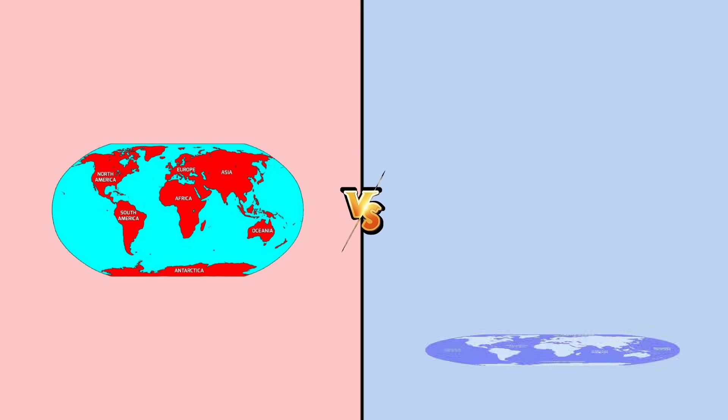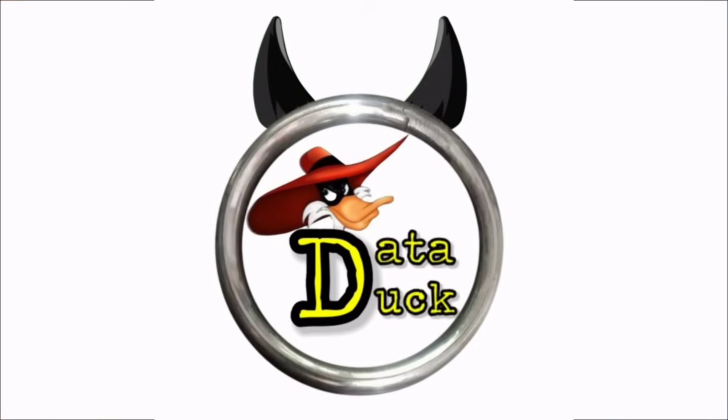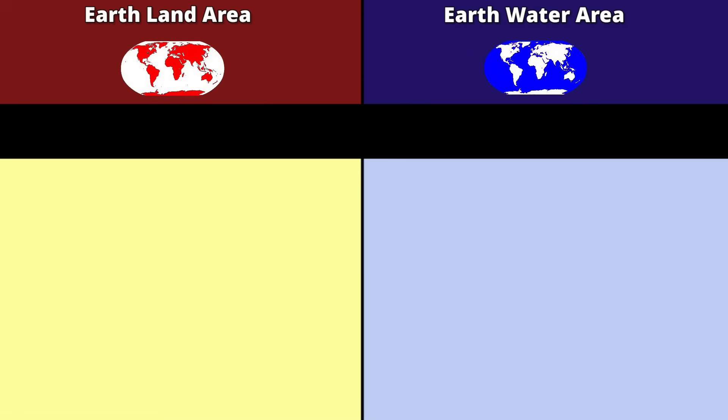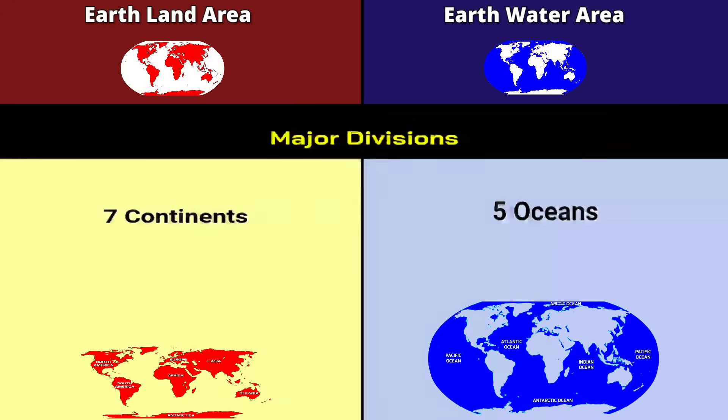Hello guys, today we see earth land area versus earth water area. Let's welcome our Data Duck YouTube channel. Major divisions: 7 continents, 5 oceans.